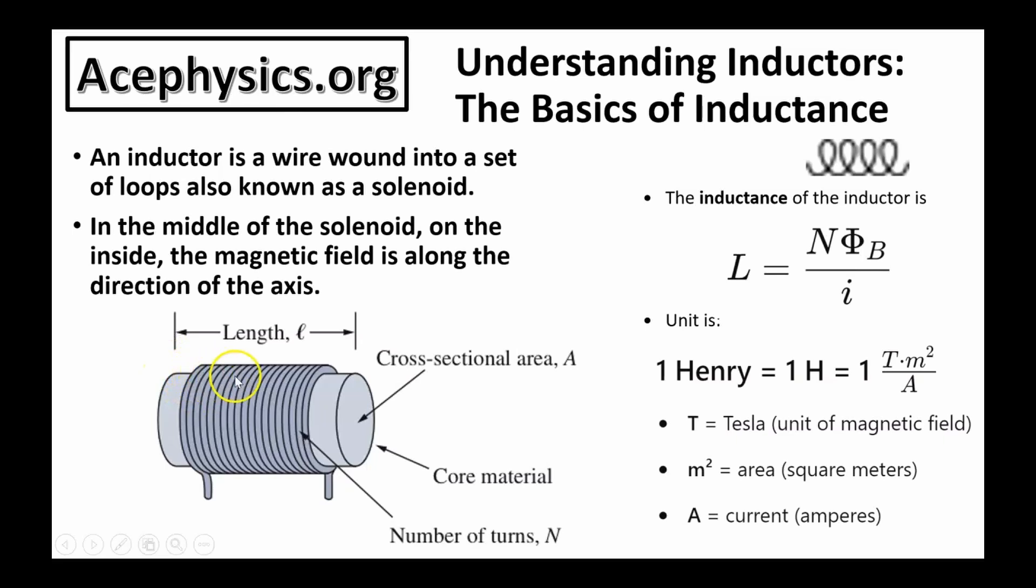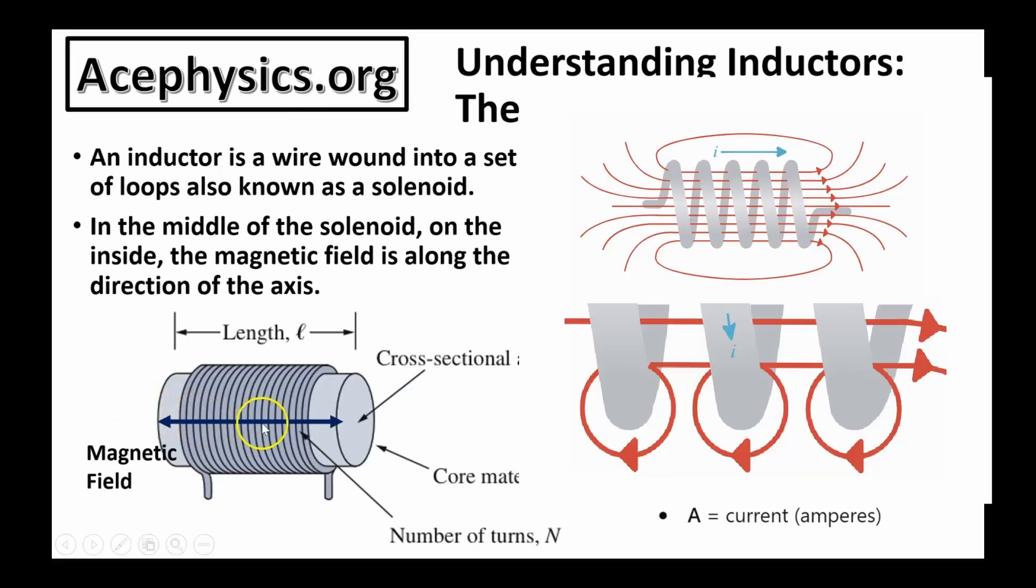One loop, two loop, three loops, N loops. In the middle of the solenoid, on the inside, the magnetic field is along the direction of the axis. So this magnetic field is inside the solenoid. You need to use a little bit of imagination here.